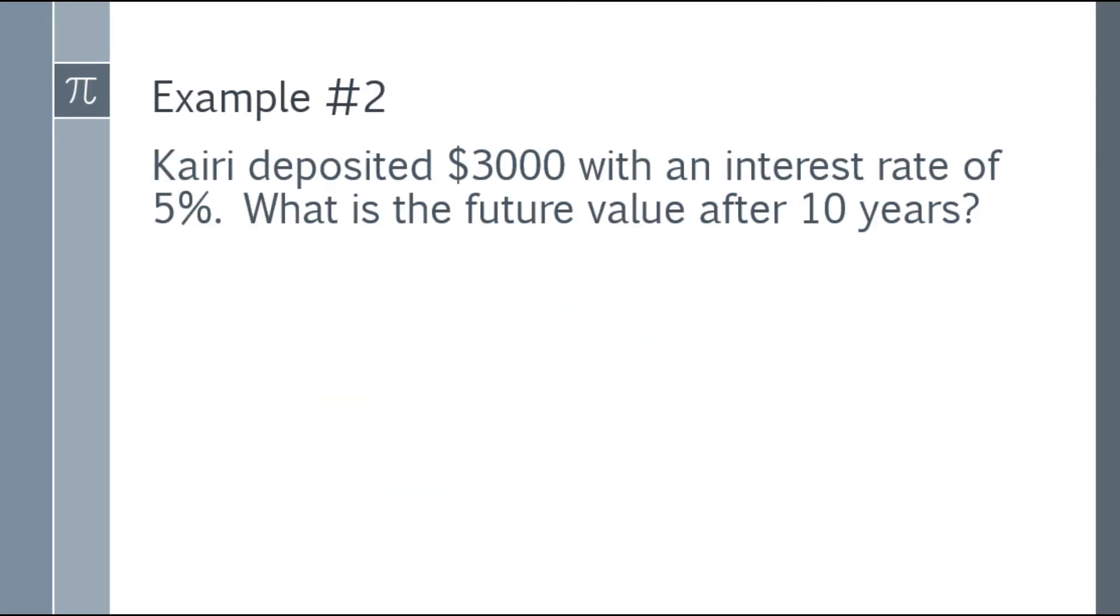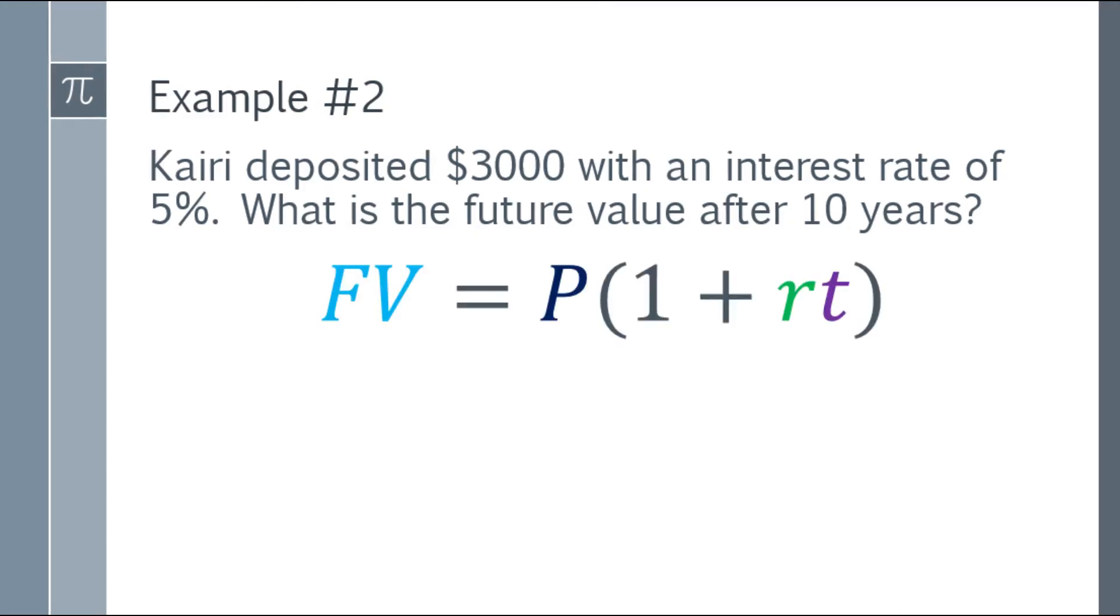Alright, so example number two. Kairi deposited $3,000 with an interest rate of 5%. What is the future value after 10 years? So we have the given: the principal is $3,000, we also have the interest rate, and we also have the time. So we can use the formula, future value is equal to the principal times the quantity 1 plus RT. Now, we have the formula, we can now substitute the given.